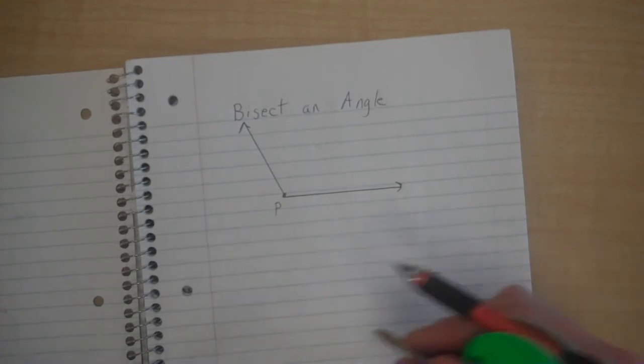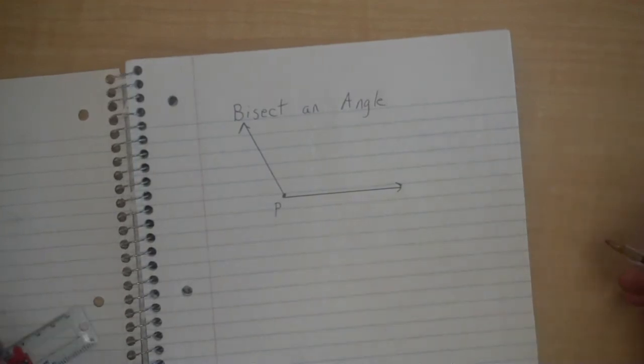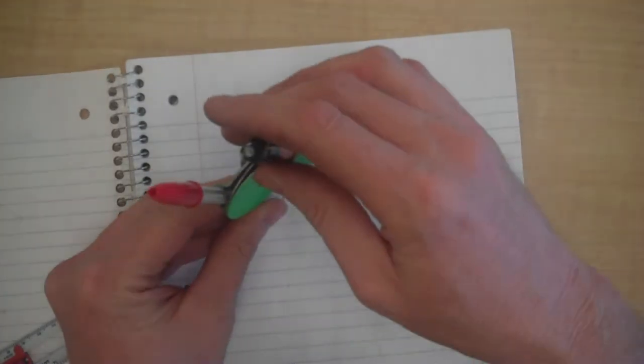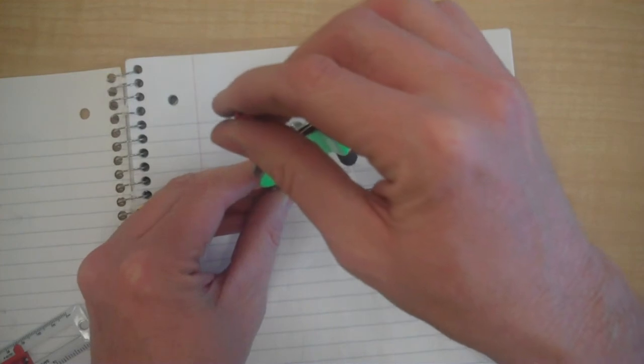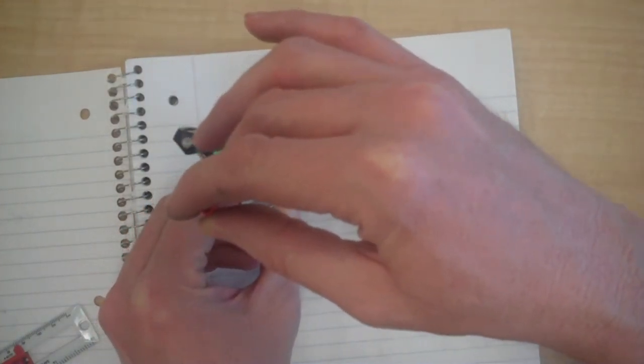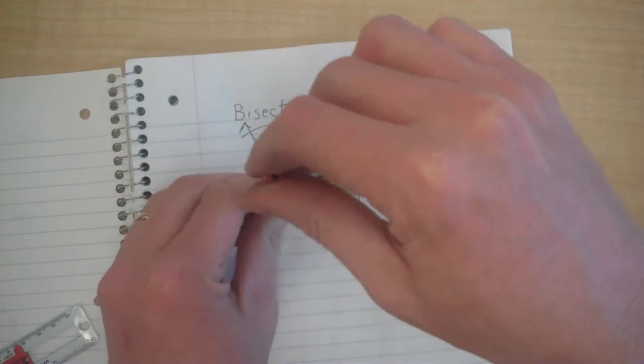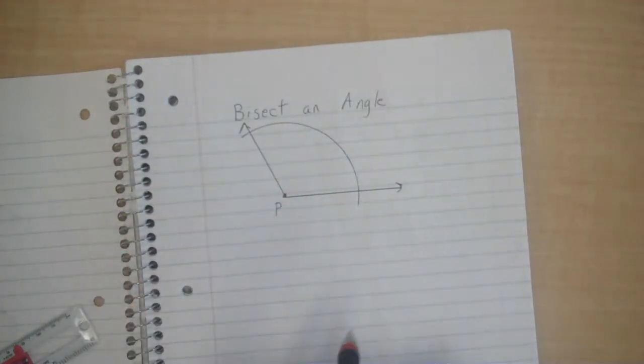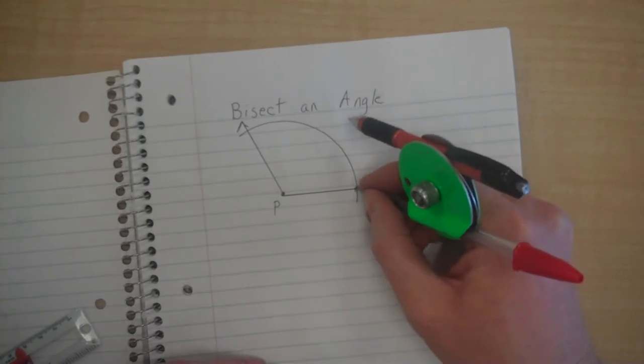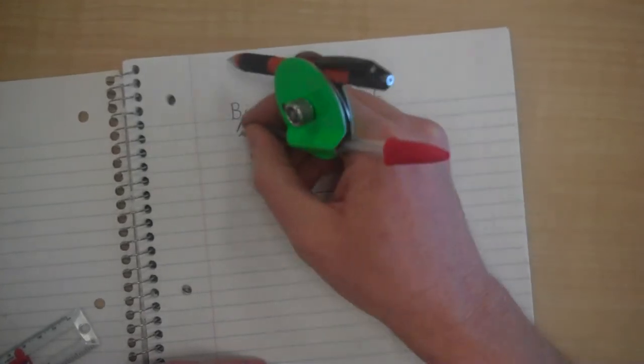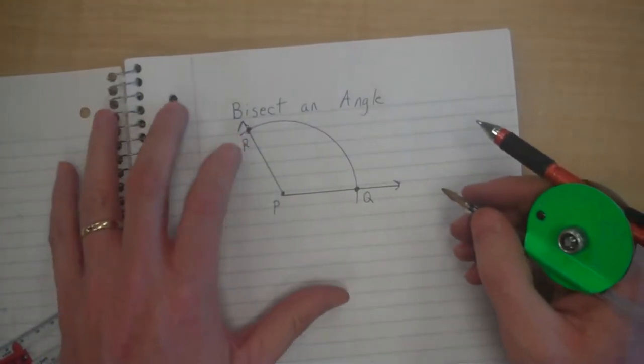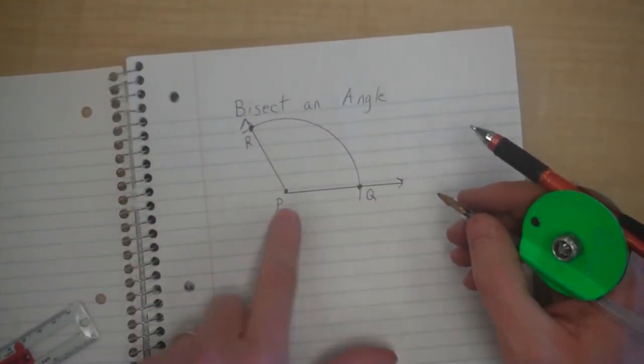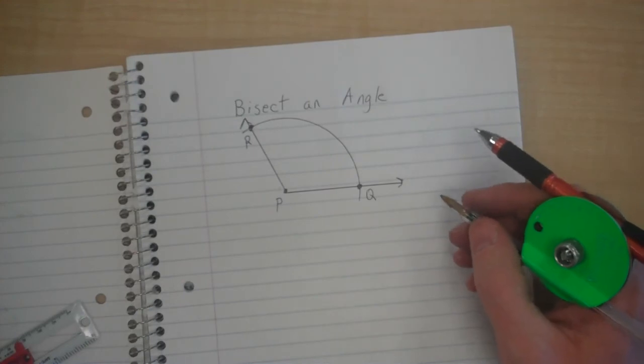Now to bisect angle P, I first put my pivot on the vertex, the point of my compass on the vertex, and I draw an arc that hits both sides of the angle, just like I did before. And I'll call this point Q and this point R. So now I have angle QPR or QPR.